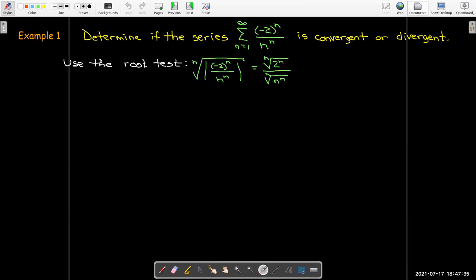It would be challenging to use any of our other tests with this, but the root test turns out to be pretty simple. I do need absolute value signs here because I have a negative 2 to the power of n. But the nth root of that then will just be 2 over n.